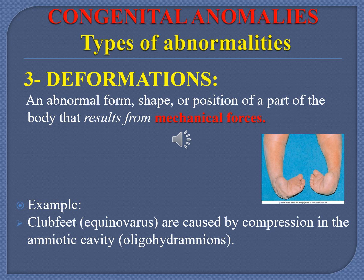The third variety of congenital anomaly is deformation — an abnormal form, shape, or position of the body resulting from mechanical forces. An example is clubfoot, also called equinovarus, caused by compression in the amniotic cavity. This is related to oligohydramnios, where the level of amniotic fluid decreases below 400 ml. The reduced fluid limits fetal movement, leading to mechanical forces between body parts resulting in clubfoot, which is correctable nowadays.